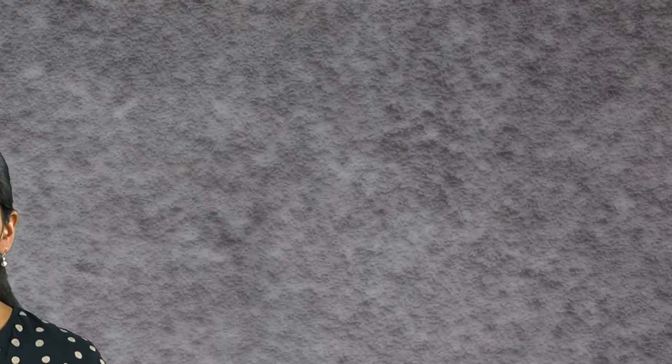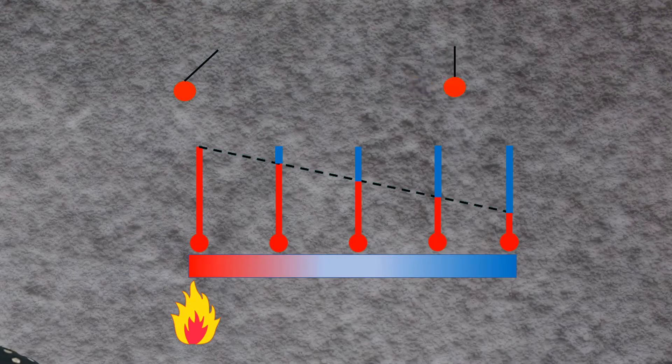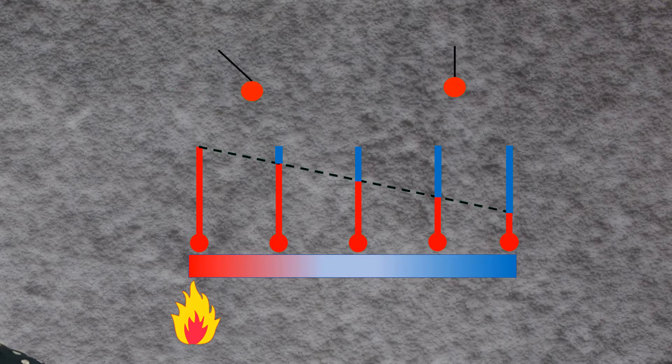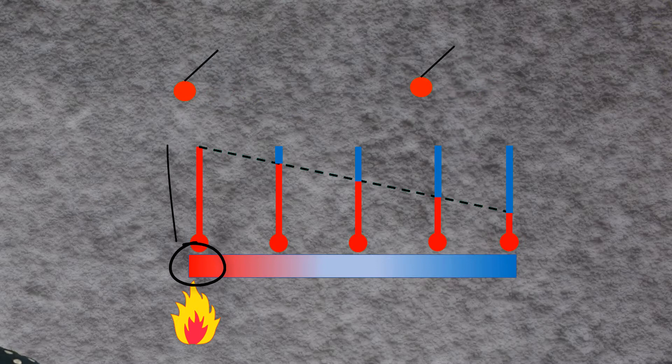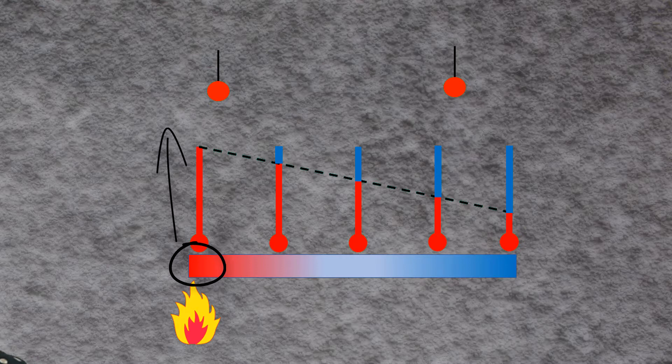The first mode of heat transfer is conduction and occurs primarily in solids. At atomic scales, molecules in a solid are always vibrating with a certain amplitude. When heat is supplied to some molecules by an external source, these molecules get excited and the amplitude of their vibration increases.